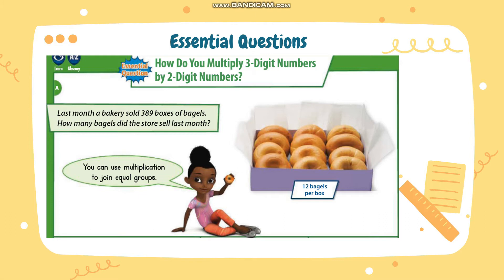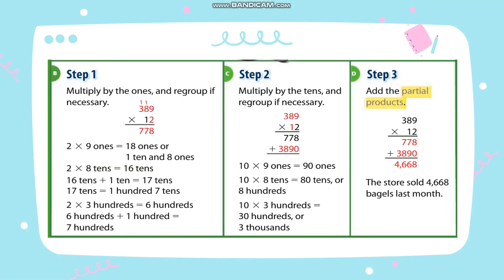How do you multiply three-digit numbers by two-digit numbers? Let's analyze this problem. Last month, a bakery sold 389 boxes of bagels. How many bagels did the store sell last month? You can use multiplication to join equal groups. Remember that in one box, there are 12 bagels. The first step is to multiply by the ones, then regroup if necessary. 2 multiplied by 9 is 18, so write 8 and regroup 1.